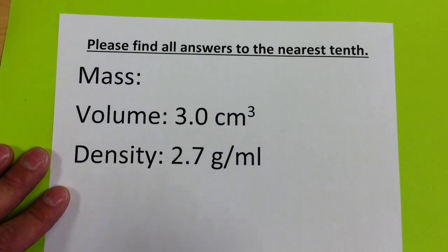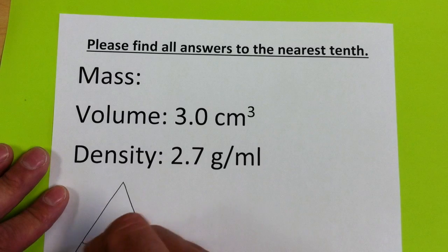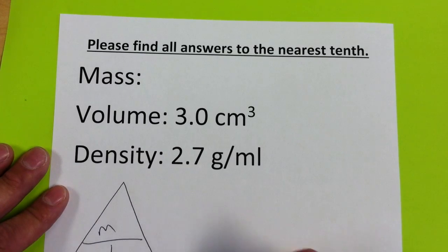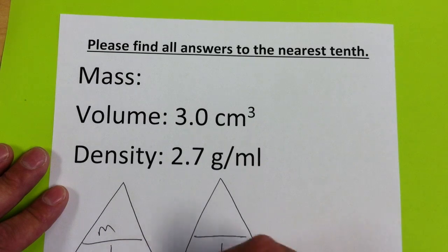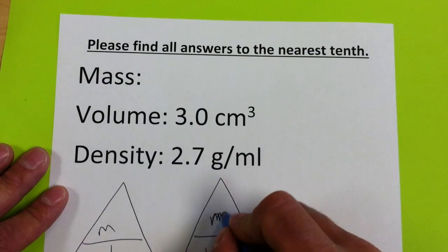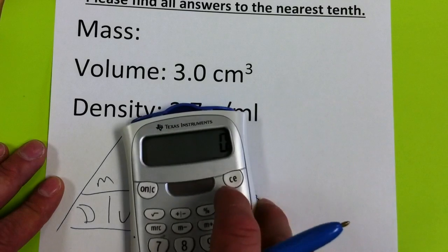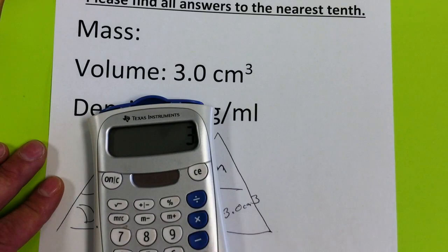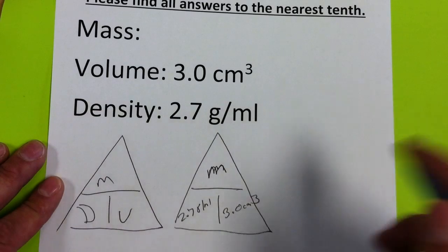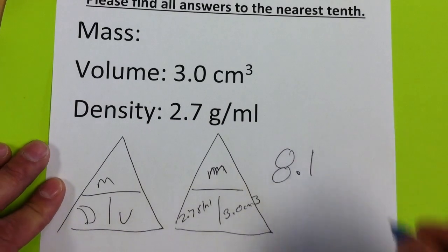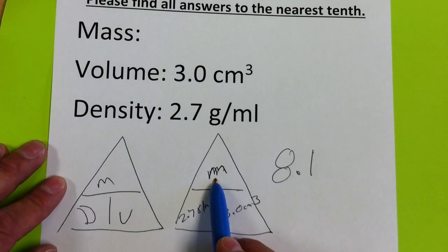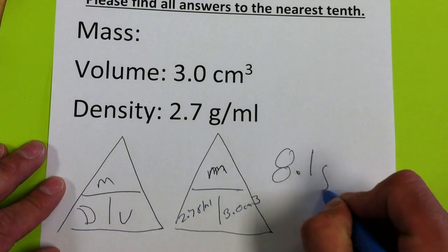Here's a problem, ladies and gentlemen, where we're trying to find the mass. So again, I start off with my density triangle. I plug my numbers in. I'm looking for mass. So you'll notice these numbers are next to each other. So I'm going to multiply 3 times 2.7, and that gets me 8.1. Now I'm going to think, what are the units for mass? Hmm, I know I use a triple beam, but oh, that's right. It's grams. So my answer would be 8.1 grams.